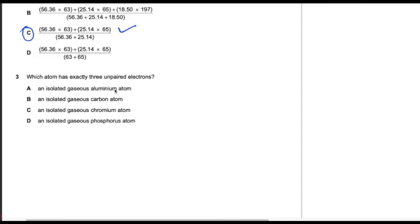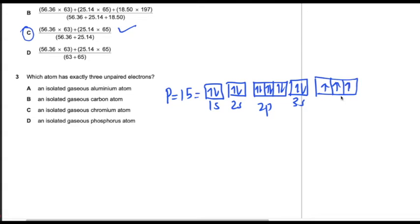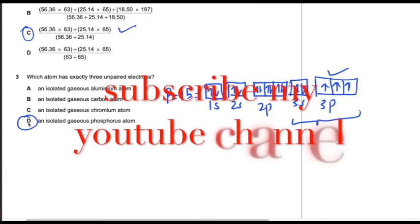Question number three. Which atom has exactly three unpaired electrons? Definitely phosphorus. Phosphorus has 15 electrons, so its electronic configuration is 1s2, 2s2, 2p6, 3s2, and 3p3. In the 3p subshell, there are three orbitals each with one electron: 3px1, 3py1, 3pz1. So phosphorus has three unpaired electrons. The answer is the isolated gaseous phosphorus atom.